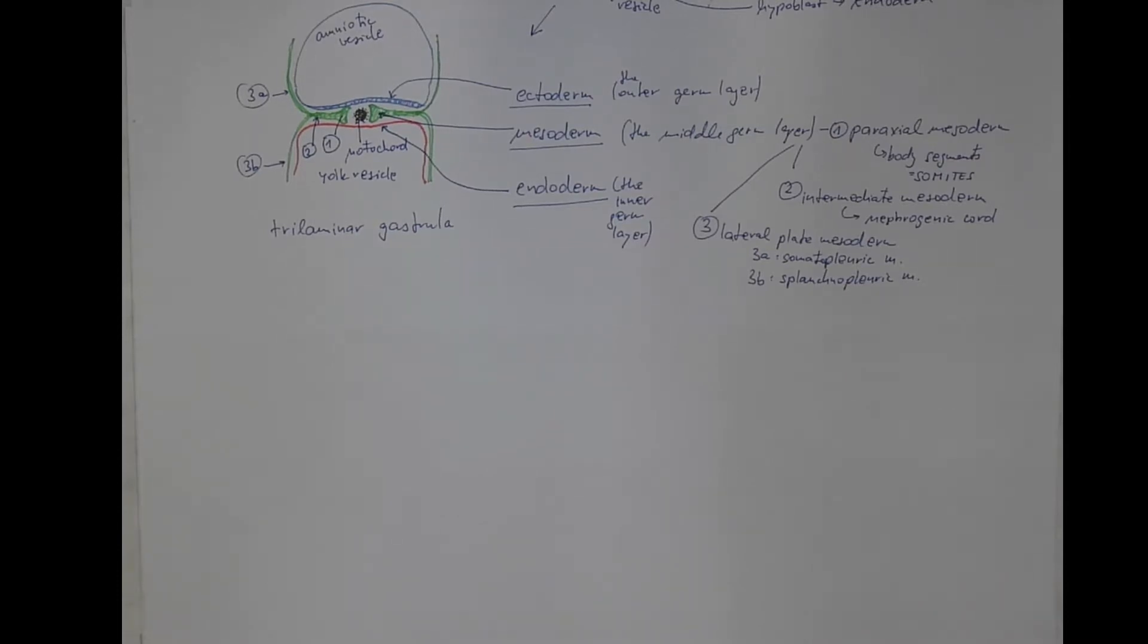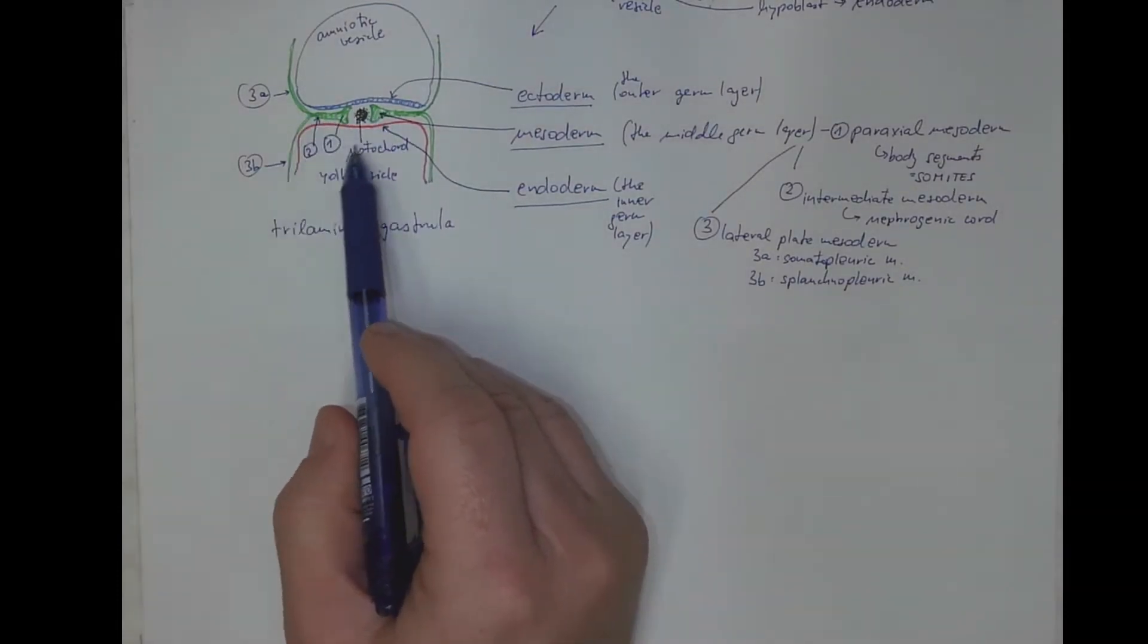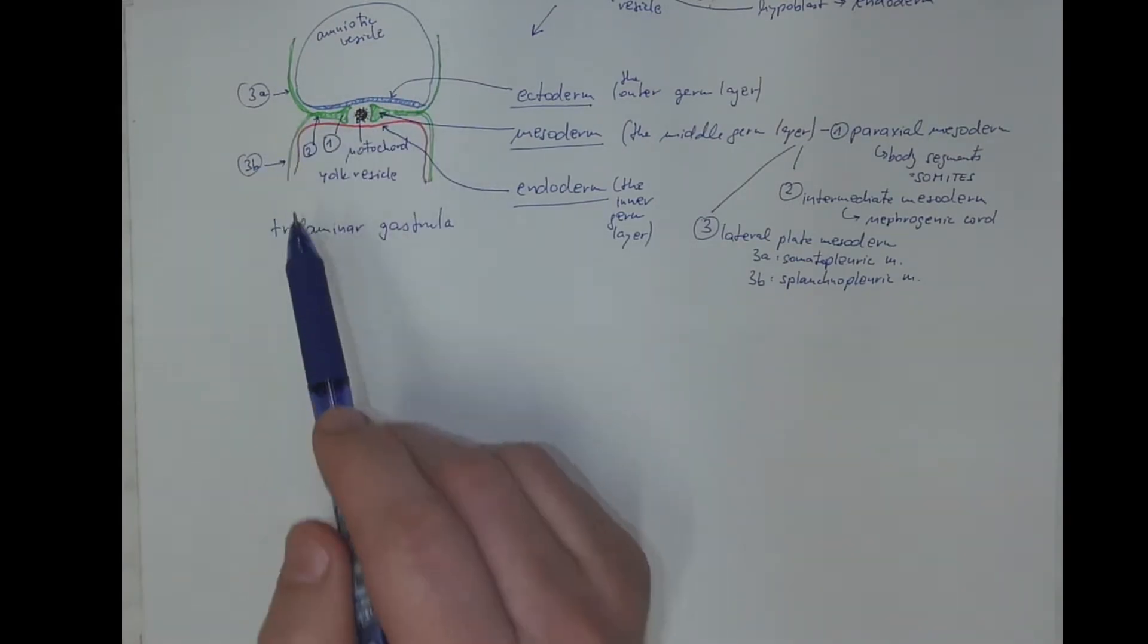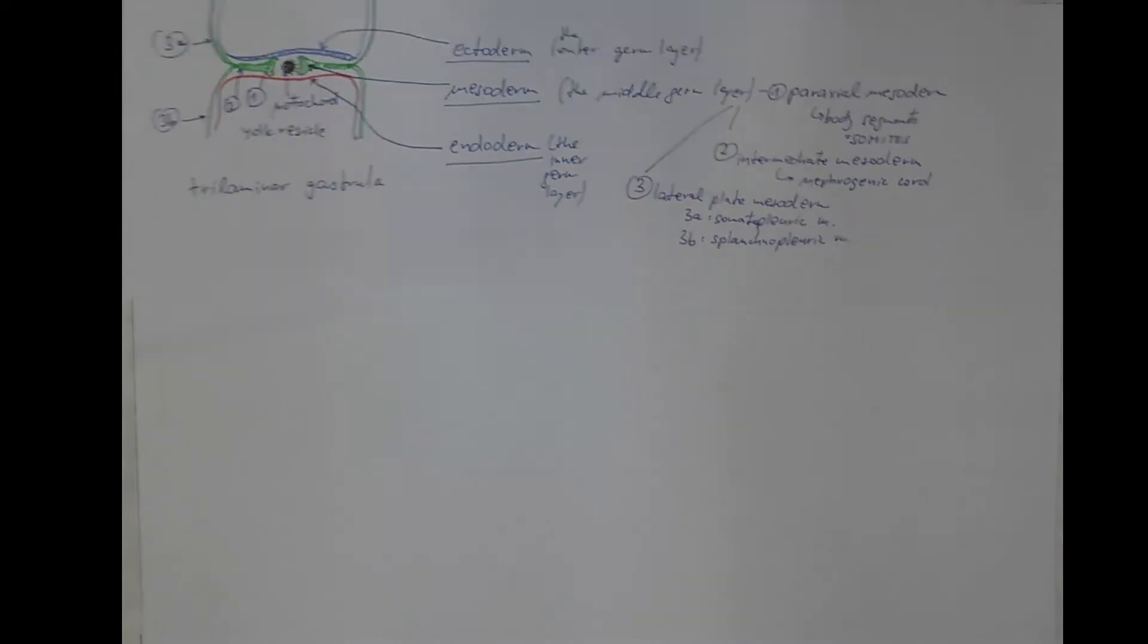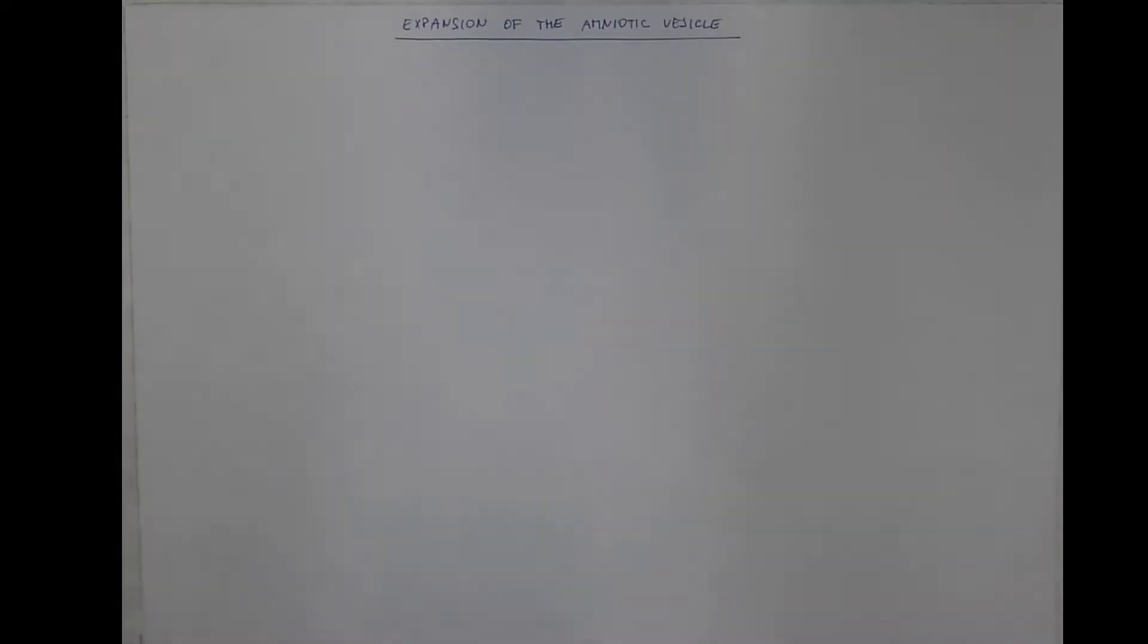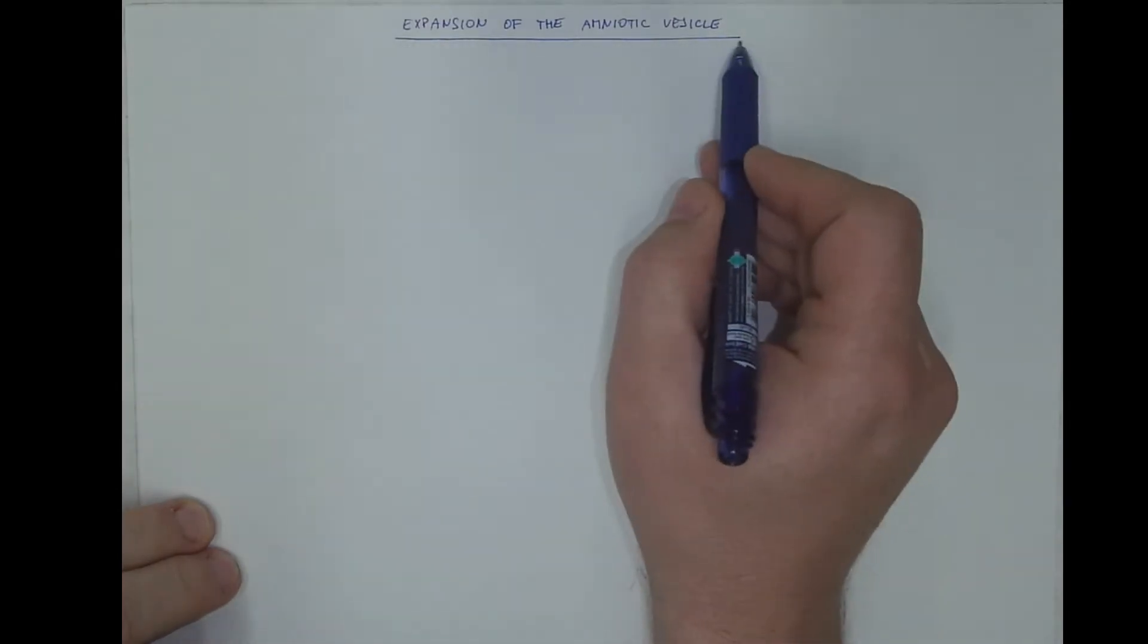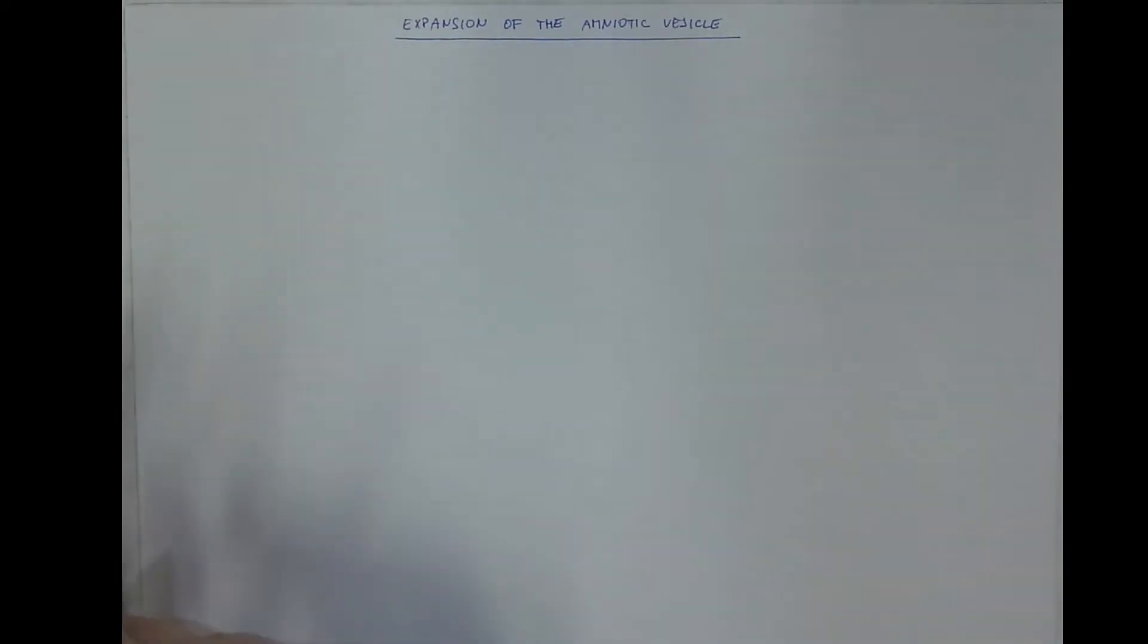Let us explain how a trilaminar gastrula, which is a flat structure, transforms to the basic shape of the human body. One of the mechanisms here is the expansion of the amniotic vesicle.